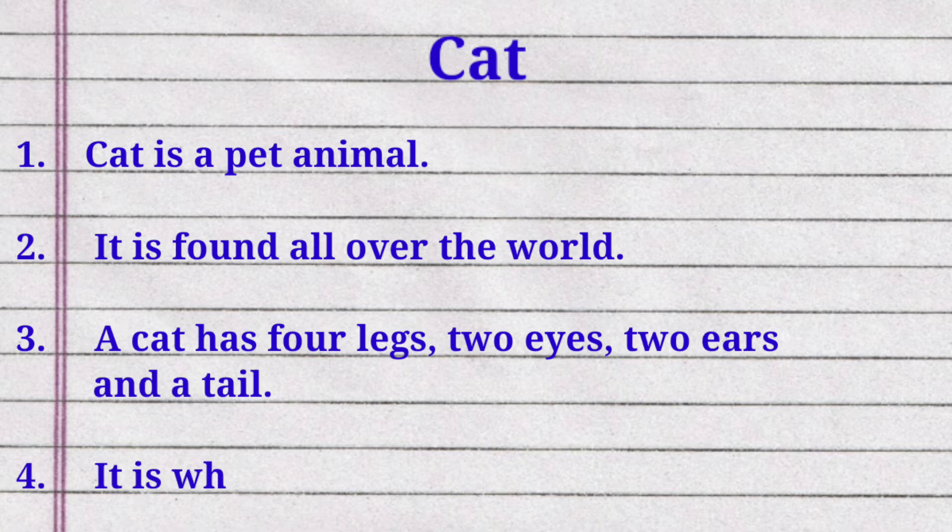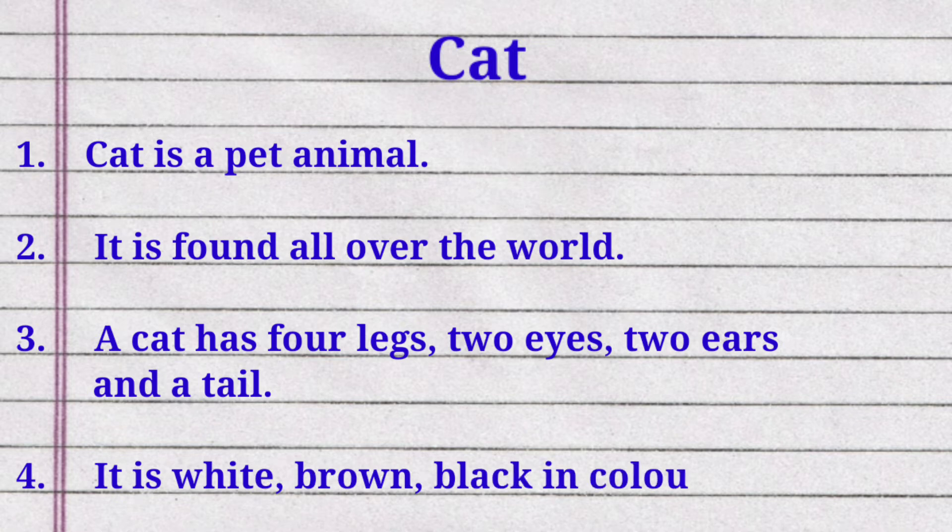Fourth line: it is white, brown, black in color. Fifth line: it has soft hairs all over the body.